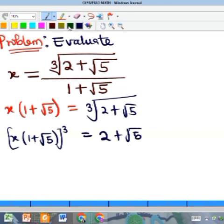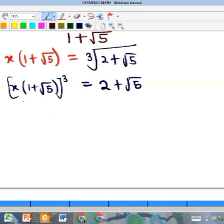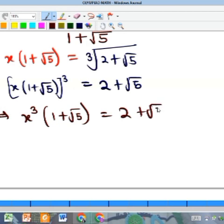So what can we do next? We will try to evaluate the bracket. By the rule of indices we are told that (ab)ⁿ is the same thing as aⁿ times bⁿ. So that means that the power 3 can come on x and it can also come on (1 plus root 5). This is still equal to 2 plus root 5.